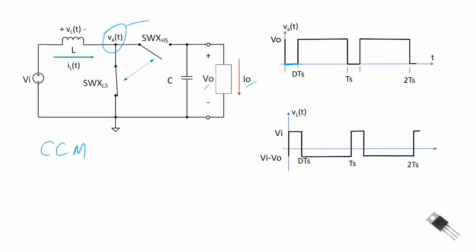When the switch is closed, V_a is basically shorted to ground. When we open this switch and close the high side switch, the output voltage is at the same potential as V_a. So the node voltage at V_a is oscillating up and down from zero to the output voltage with a duty cycle of D.